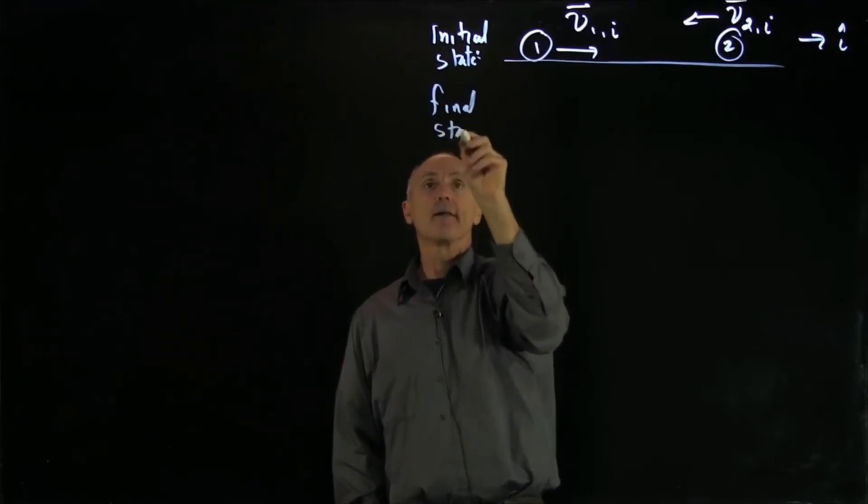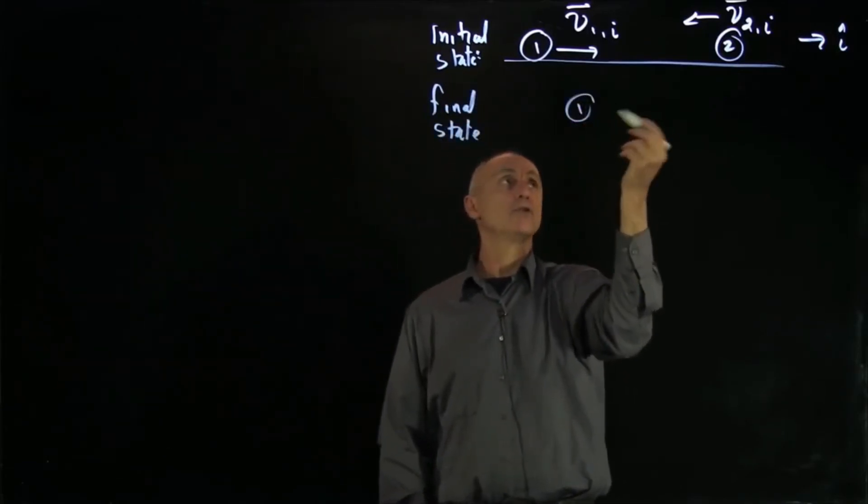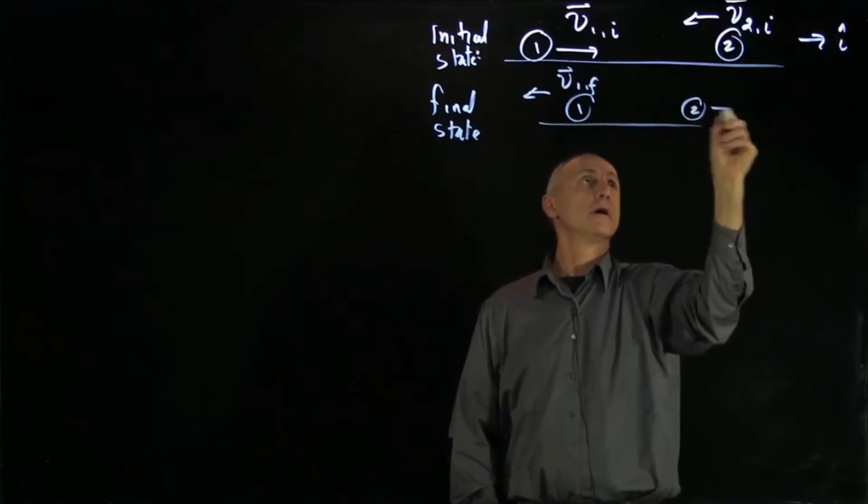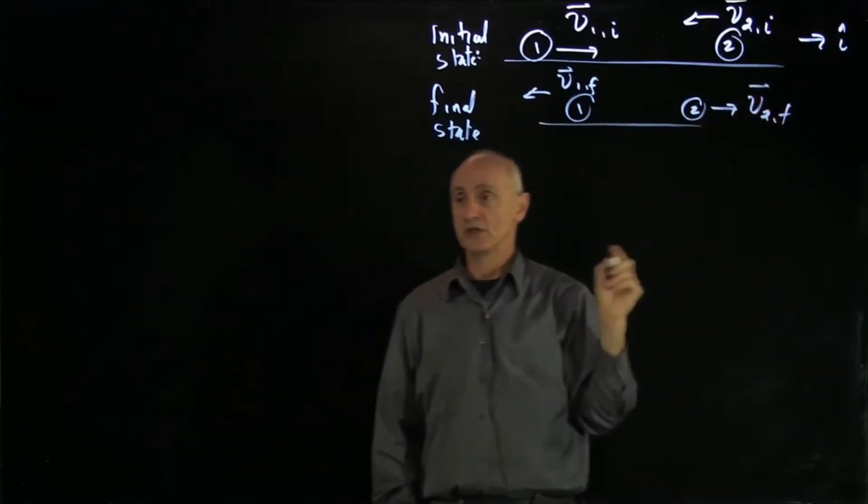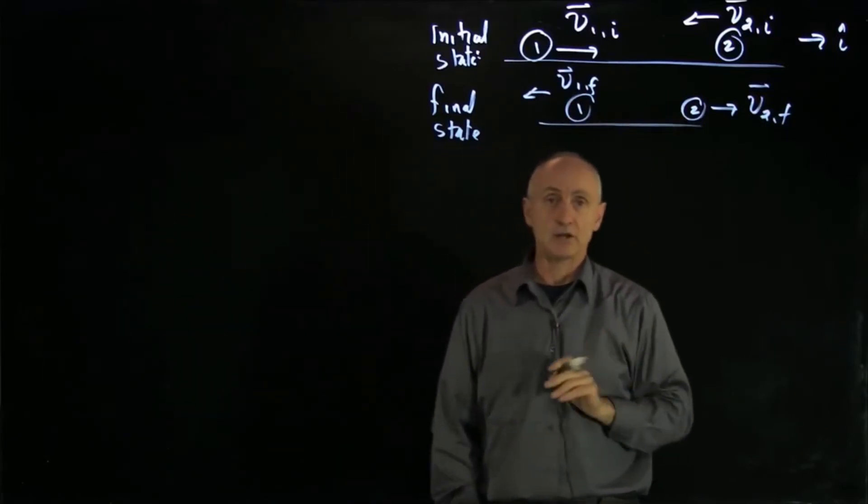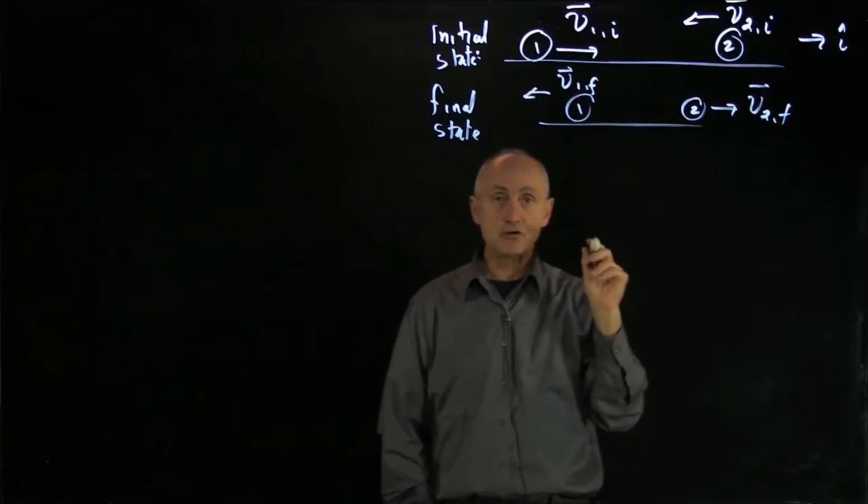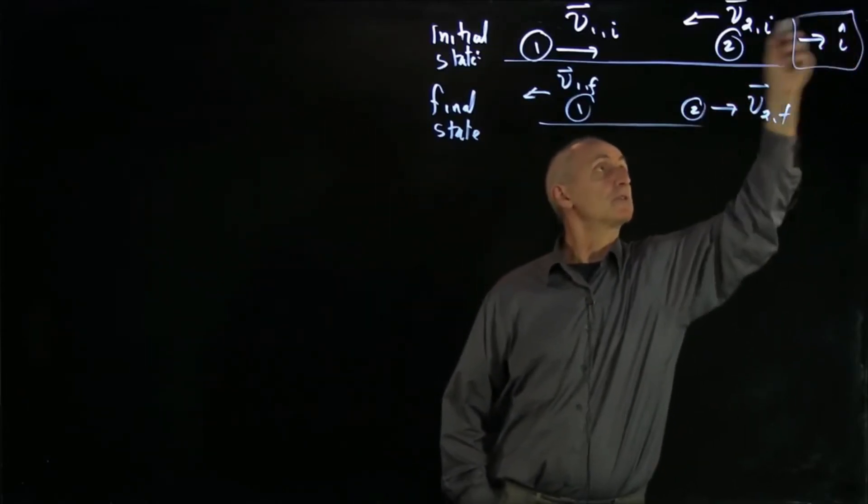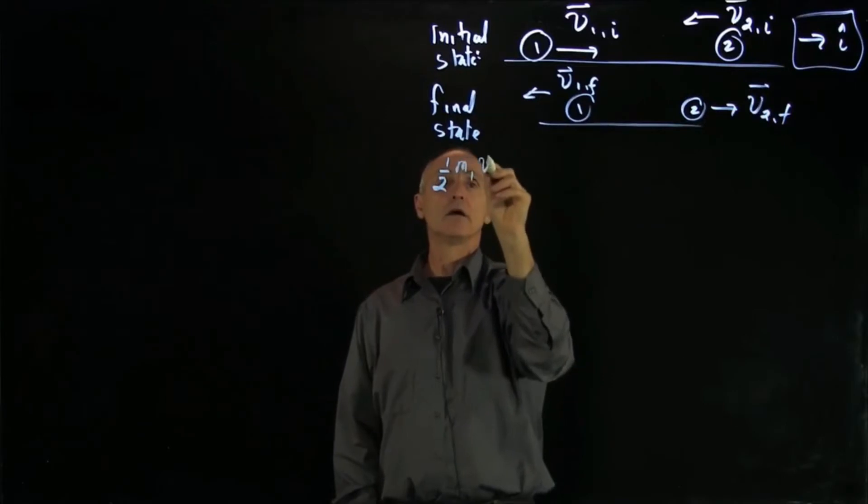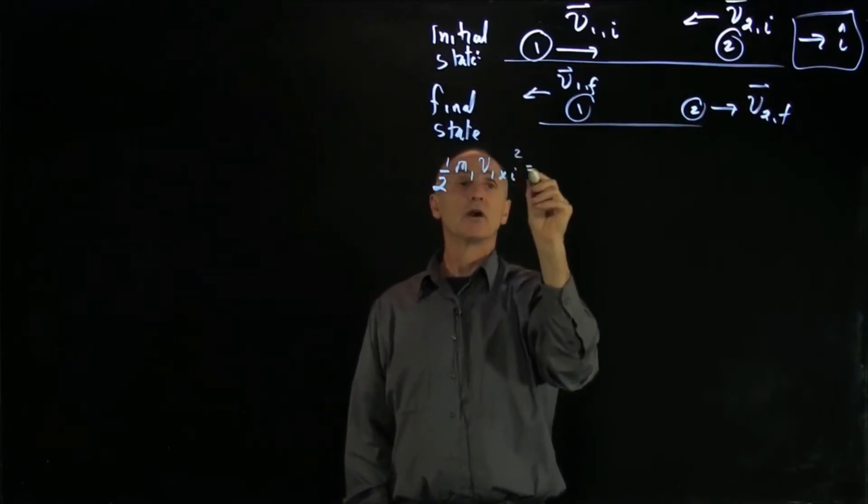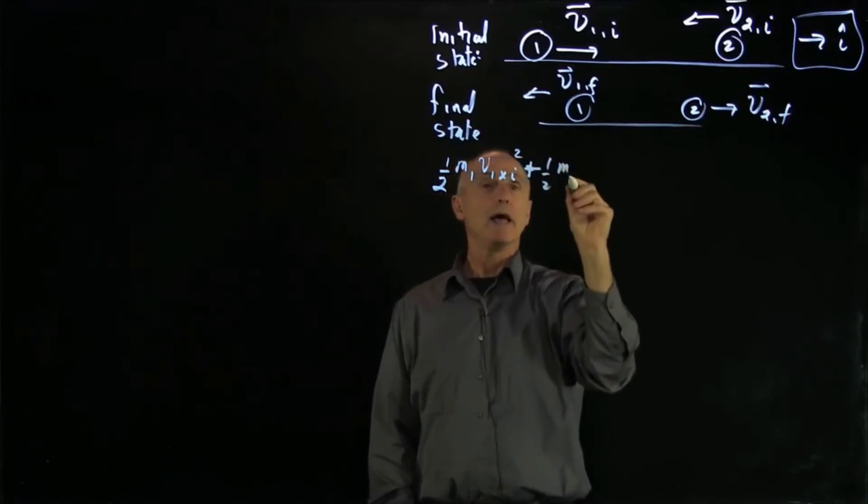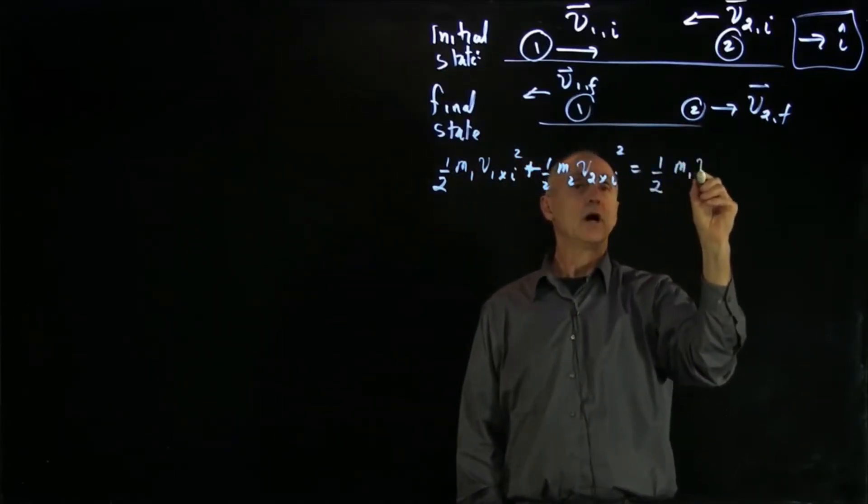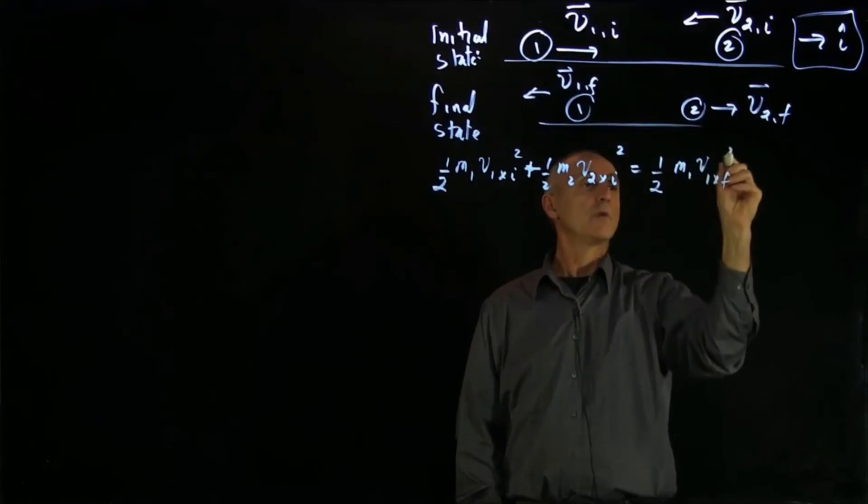And here you can imagine we're going to use a ground reference frame. So both objects are moving. And our final state has object 1, well, we don't know which way it's going. We can just say it bounced back. And object 2 also bounced back. But the goal of our problem is to determine these vectors. And by knowing the vectors, we know which way they go. Now, because energy and momentum are constant, let's write down our two equations. And I'm going to write them in terms of components. So we have 1/2 M1 v1 x initial squared plus 1/2 M2 v2 x initial squared equals 1/2 M1 v1 x final squared plus 1/2 M2 v2 x final squared.